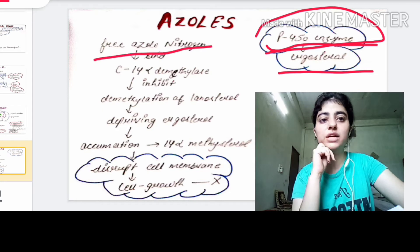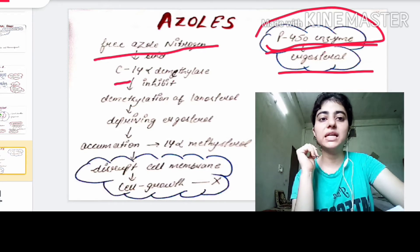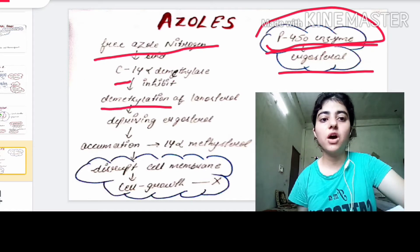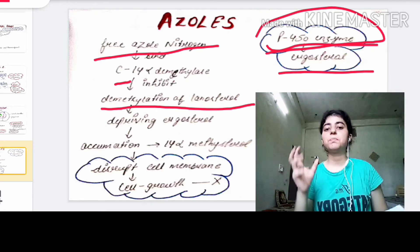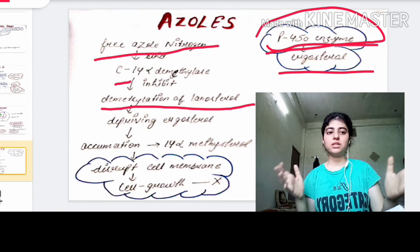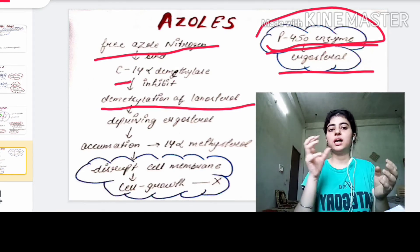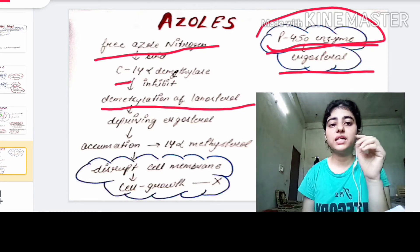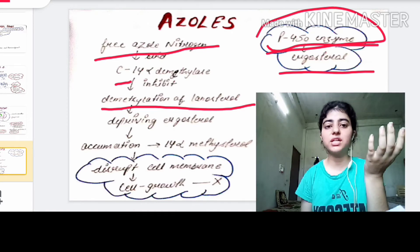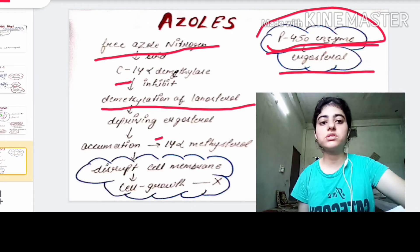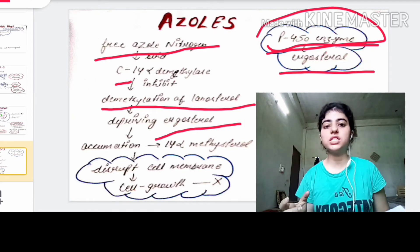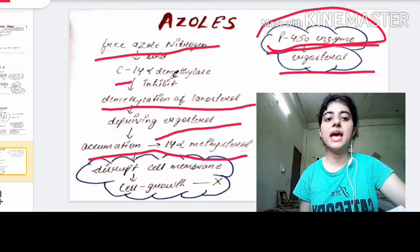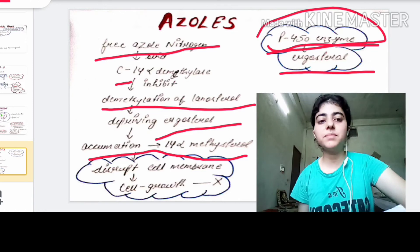The free azole nitrogen binds to the C14 alpha-demethylase enzyme, which inhibits the demethylation of lanosterol. Lanosterol is the precursor of ergosterol — it is like the parent from which ergosterol is made. If lanosterol demethylation is inhibited, there will be a deficiency of ergosterol. This leads to the accumulation of 14-alpha-methyl sterol, which disrupts the cell membrane.